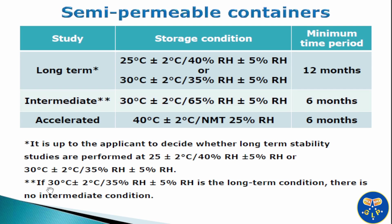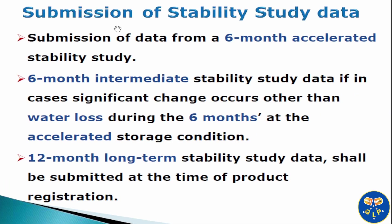The double asterisk mark indicates that if 30°C ±2°C and relative humidity of 35% RH ±5% RH is the long term condition, then there is no intermediate condition. In this case, submission of data from a 6-month accelerated stability study, 6-month intermediate stability study data if significant change other than water loss occurs during 6 months at the accelerated storage conditions, and 12-month long term stability data shall be submitted at the time of product registration.